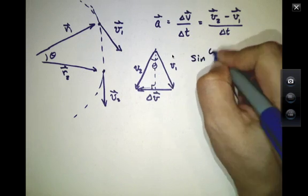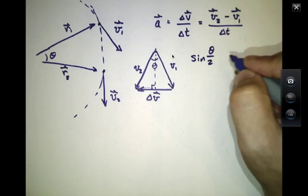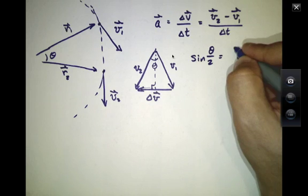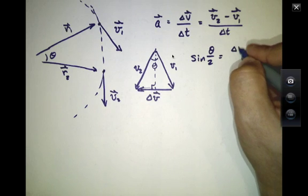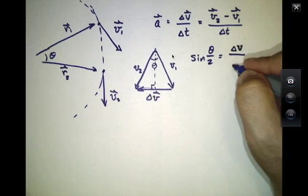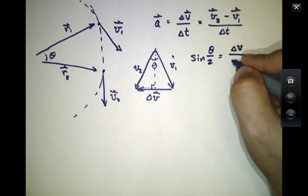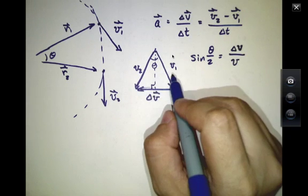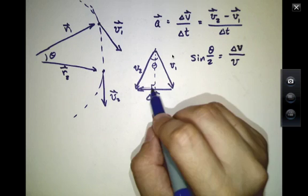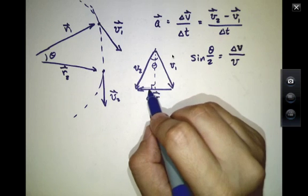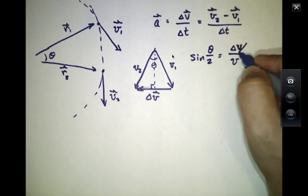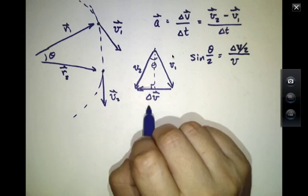As a result, I know that sine of theta over 2, which is always opposite over hypotenuse, is equal to delta V over, actually I'm just going to write V. Because V2 and V1 are vectors but they have the same magnitude. So if I'm just speaking about magnitude, oh excuse me, this is delta V over 2 divided by V.